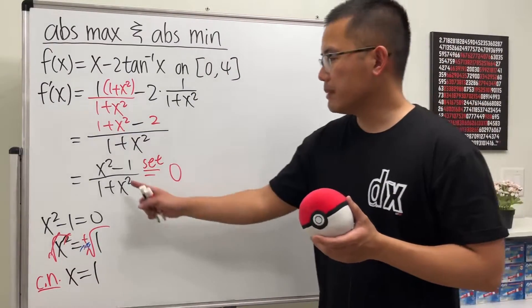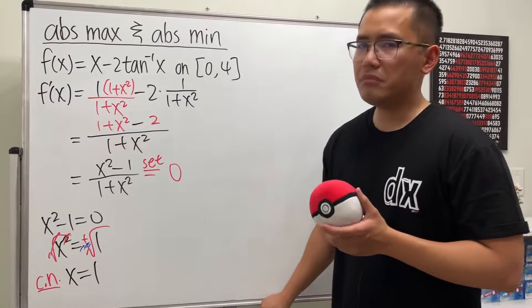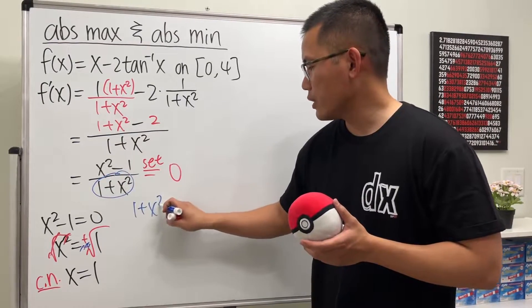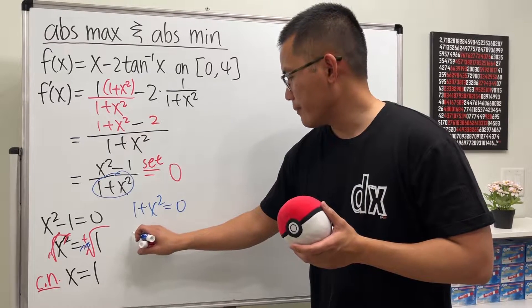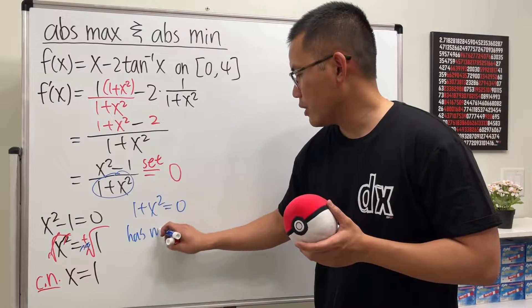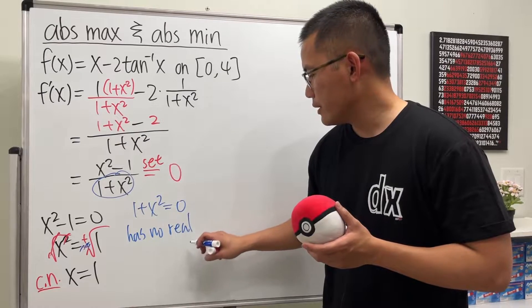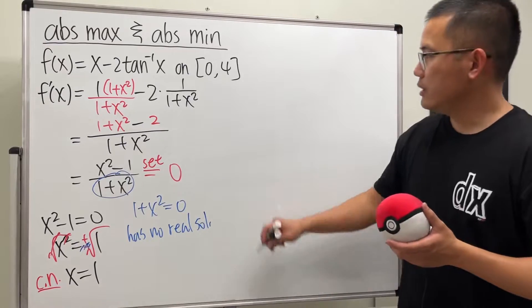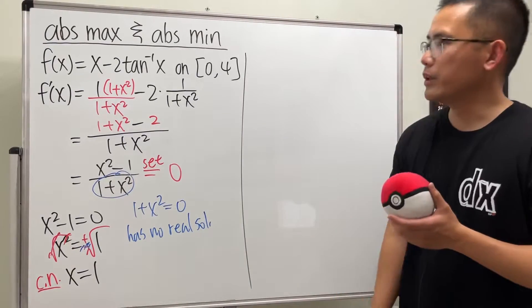And then if you set the bottom to be 0, there's no real solutions. So you don't have to worry about that. 1 plus x squared equals 0 has no real solutions. So that's the only critical number that we need.